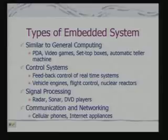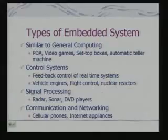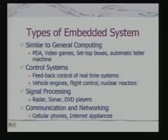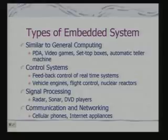Let us classify these examples into different types. Some are similar to general computing — like PDAs, video games, set-top boxes, and automatic transmissions. They are similar to general computing because the tasks are a restricted form of what you do on a computer. They respond to user input and are not really sensing external environments autonomously or activating actuators to change the external world.